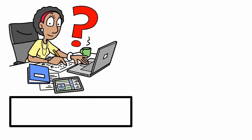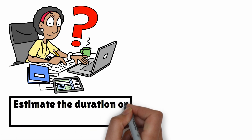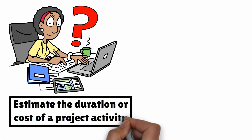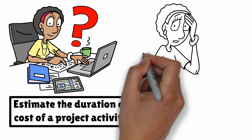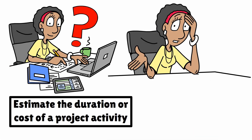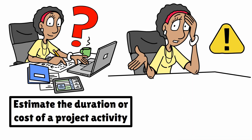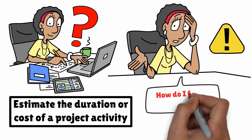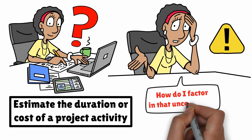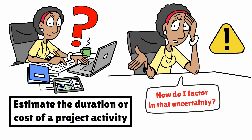Have you ever had to estimate the duration or cost of a project activity and wondered what if things go wrong, or what if they go better than expected? How do I factor in that uncertainty?